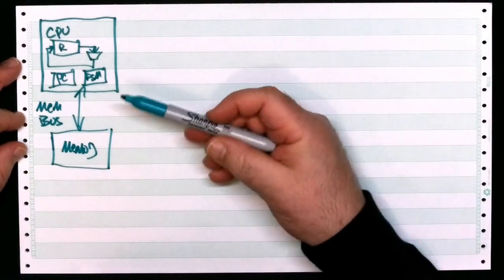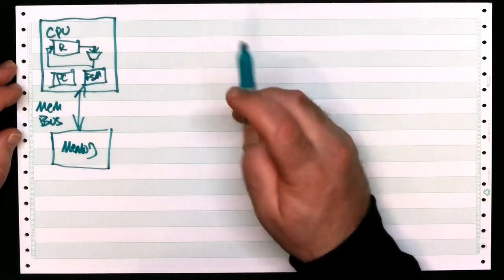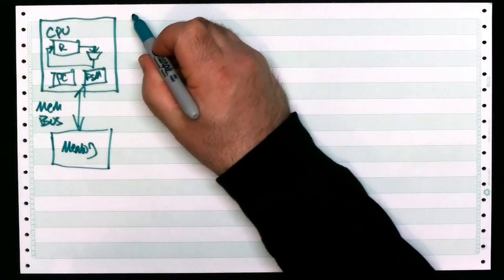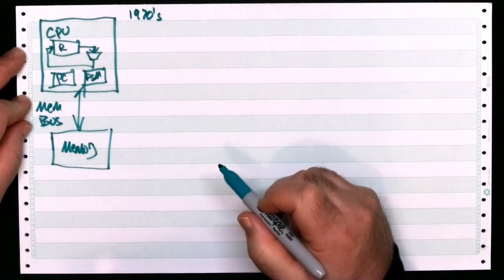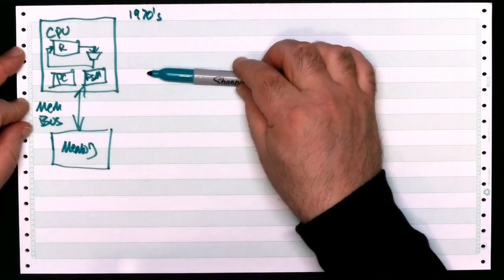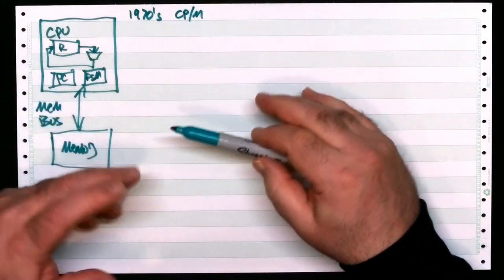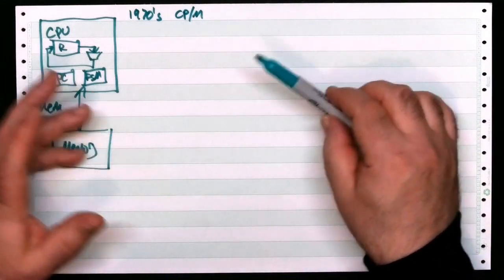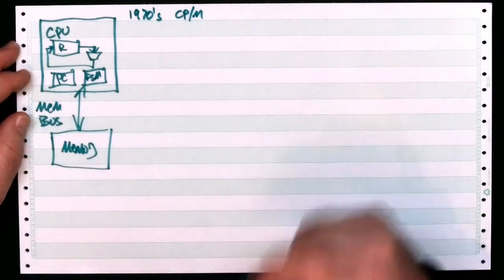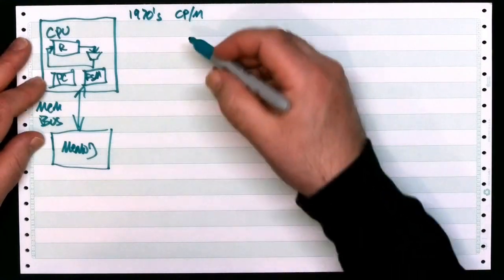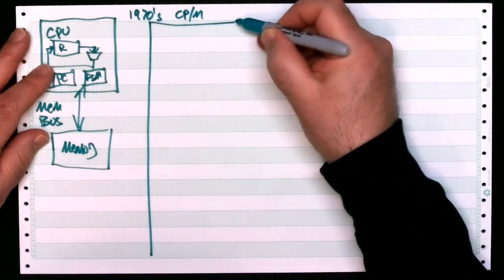So what did programs look like 40 years ago, circa the late 1970s? How did these things work? You had operating systems with names like CPM. You had your TRS-80s and your Apple IIs and stuff like that. All these machines kind of worked the same way. They still used the familiar address space that we have today.